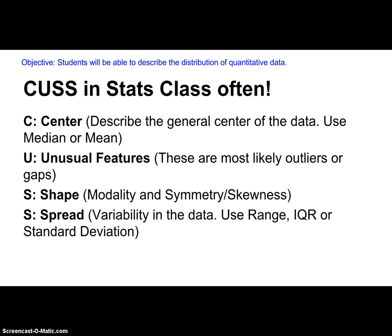So remember to CUSS: discuss the center, the unusual features, the shape, and the spread. If you do this, you will get your answers correct and get all the points you can on the AP exam for describing a distribution of quantitative data.